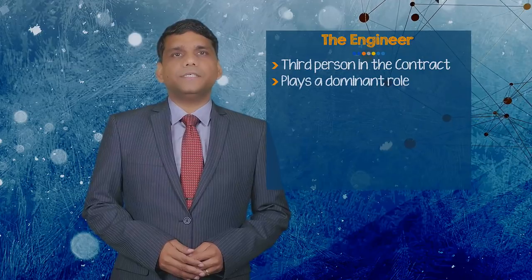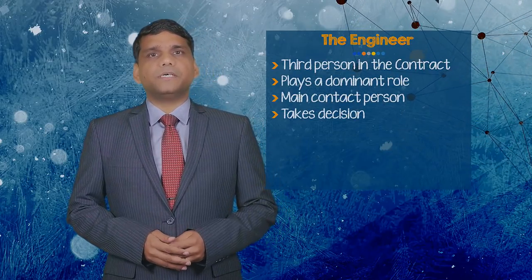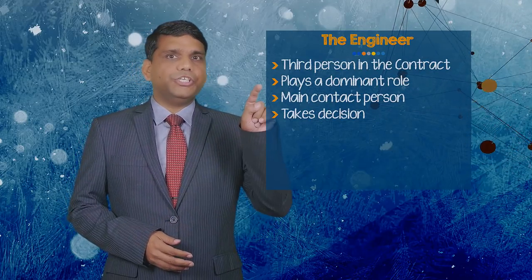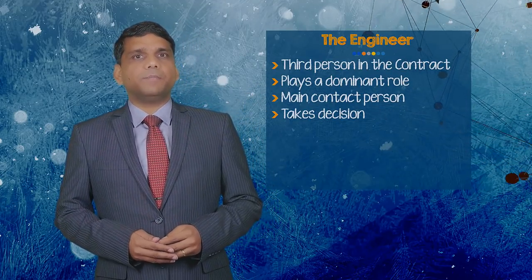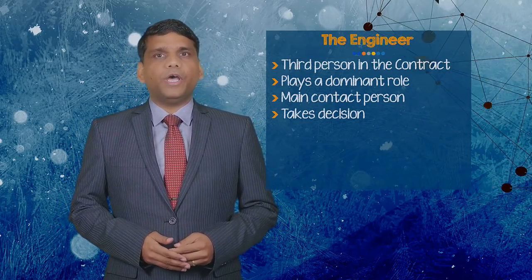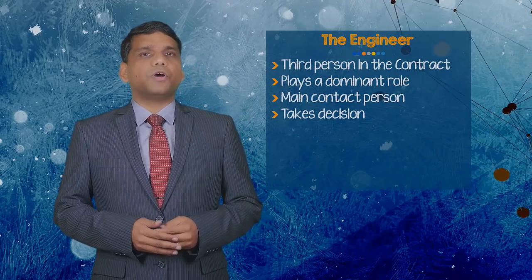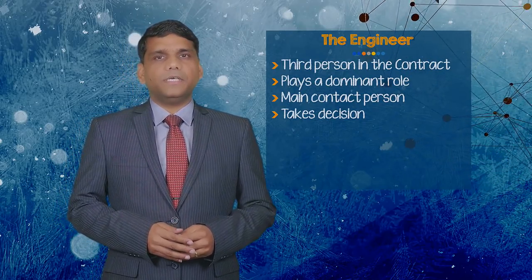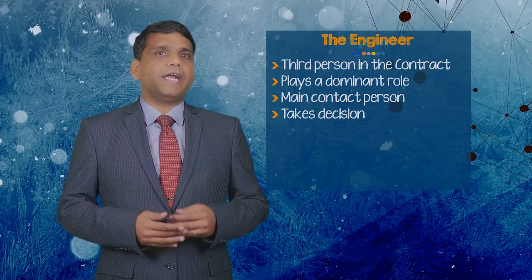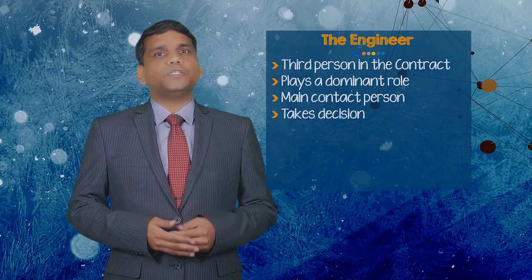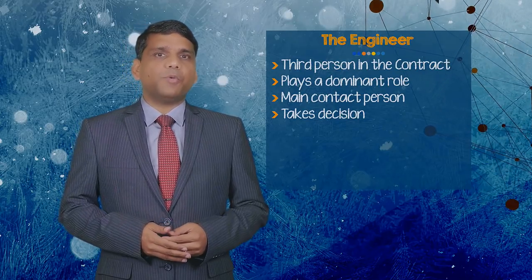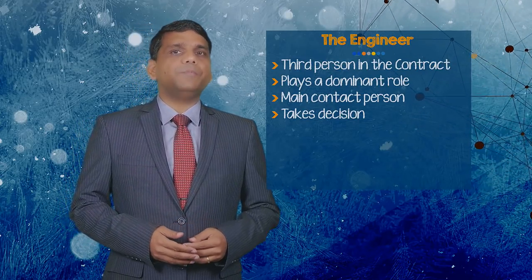As stated earlier, there is always a third person between employer and contractor who is known as the engineer, and this person always plays a dominating role in contracts founded on FIDIC Red Book and Yellow Book conditions of contract. The contractor's main contact person is the engineer for all contractual and administrative issues, and not the employer. The engineer takes decisions which in other forms of contracts would be taken by the employer.